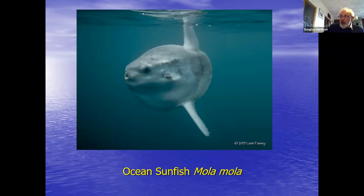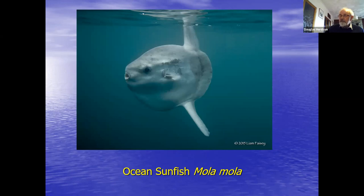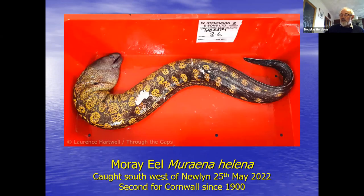Ocean sunfish — no relative data yet compared to last year, but they were around from Scilly right up to Devon from May to September. Among the rarities: a moray eel caught southwest of Newlyn in May was the second for Cornwall since 1900 — quite a large one at 3.6 kilos.